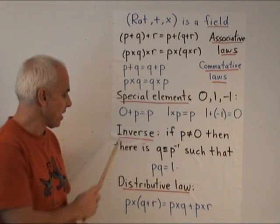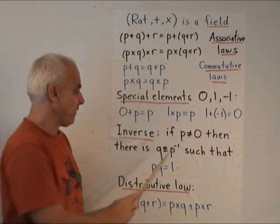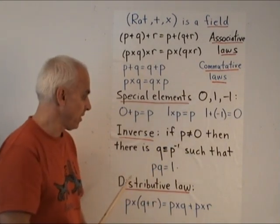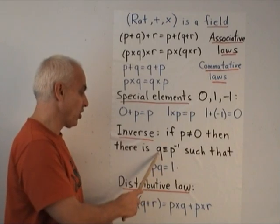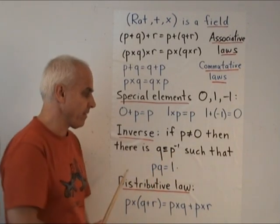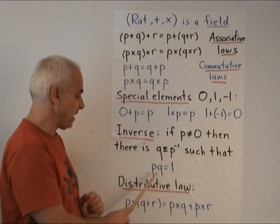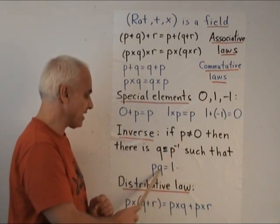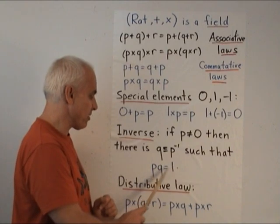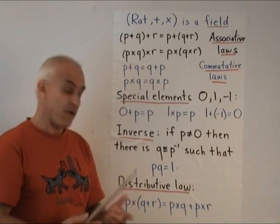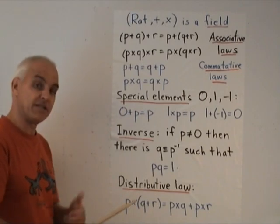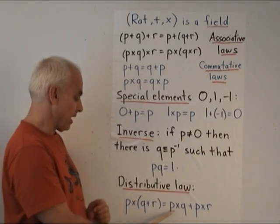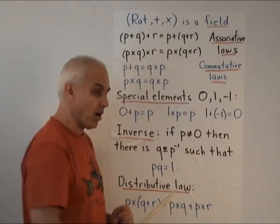Then there's a further property called the inverse property. That if you have any element p which is not 0, then there should be another element q, sometimes denoted p to the minus 1, which has the property that p times q equals 1. So every element p has an inverse. And finally the distributive law that connects multiplication and addition. p times q plus r equals p times q plus p times r.